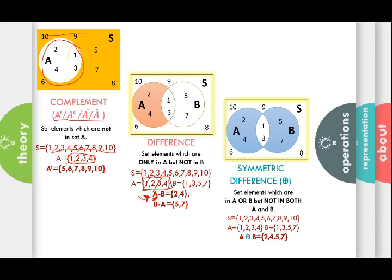The next operation is symmetric difference. In symmetric difference, we perform union of the two sets minus intersection — meaning the elements which are in A or in B but not in both A and B. It is represented by A ⊕ B, and can be written as (A ∪ B) − (A ∩ B).